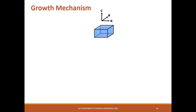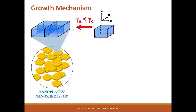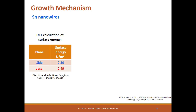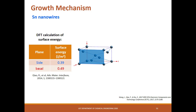Returning to the growth mechanism, if we consider an anisotropic crystal structure, if the surface energy of the basal plane is lower than the surface energy of the side plane, 2D nanomaterials will be formed. On the other hand, if the basal plane has higher surface energy than the side planes, 1D nanomaterials will be formed, such as nanorods or nanowires. An example of an anisotropic crystal structure is tin. Based on DFT calculations performed by Shao et al., the side plane has lower surface energy than the basal plane, so the particle grows along the basal plane to form 1D nanomaterials.